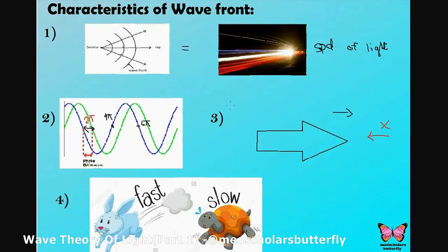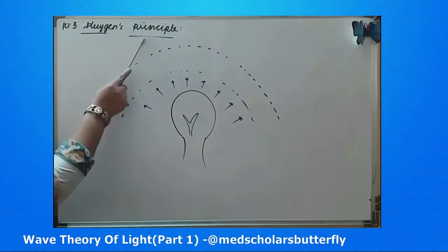A fourth characteristic is that the wavefront can travel fast or slow, or with different velocities, in different media.